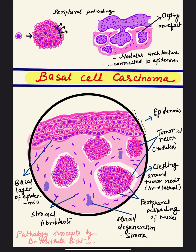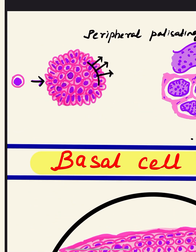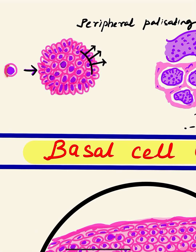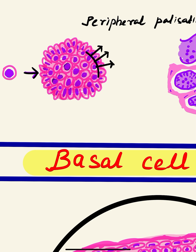First, the tumor cells in basal cell carcinoma are basaloid in appearance — they are small-sized cells with a central nucleus and a scanty amount of cytoplasm. When we see the tumor nest, it will appear more bluish in color because the area covered by the nucleus is sufficient to make it appear blue rather than pink, and the cytoplasm is less in amount as they are basaloid.